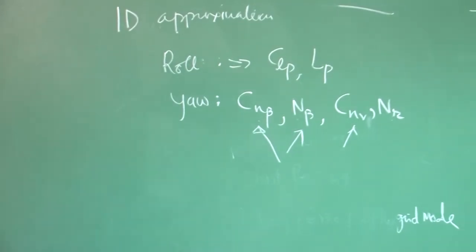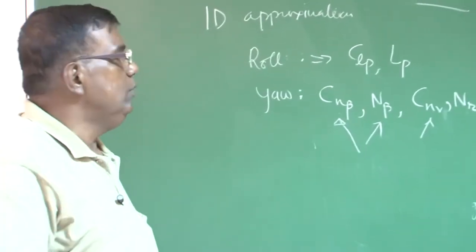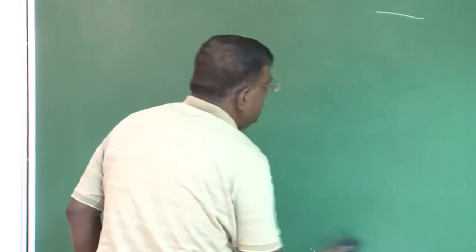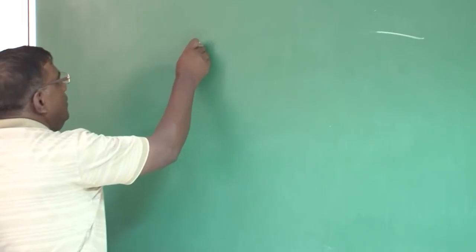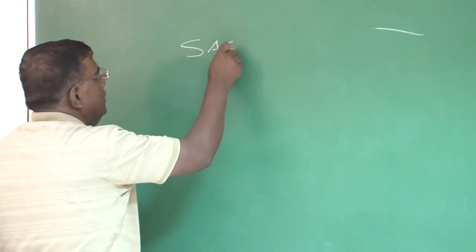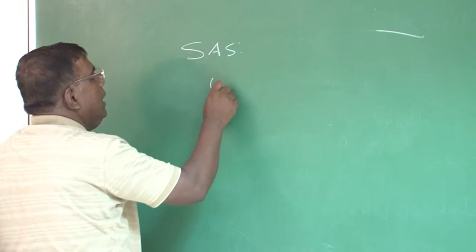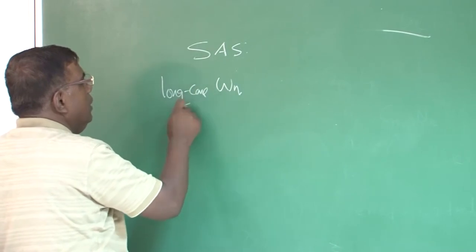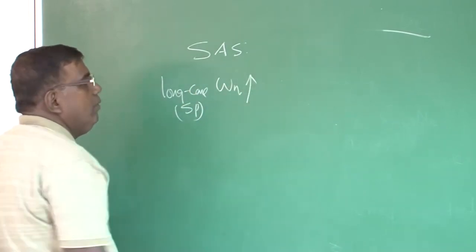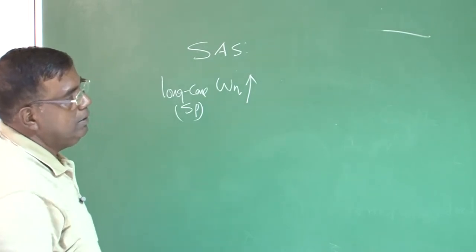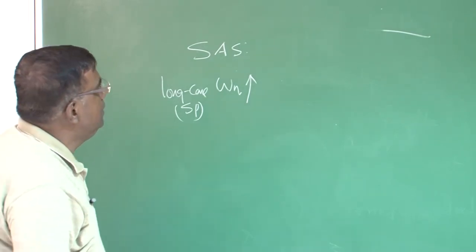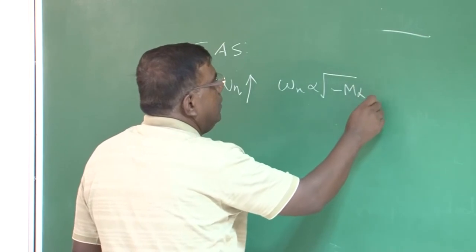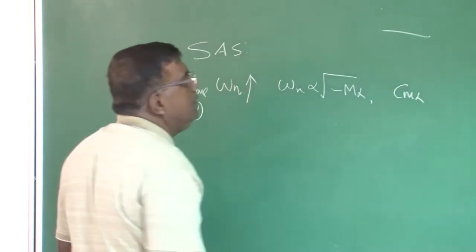Once we have developed that background, now we made an attempt for understanding stability augmentation system. And there, we talked about SAS, we talked about how to increase omega_n. Let's say, we are talking about longitudinal case, short period. We said we have to increase omega_n from the one dimensional analysis or from the approximation we did. We knew that omega_n is proportional to under root of minus M_alpha. So I have to tweak C_m_alpha, right.